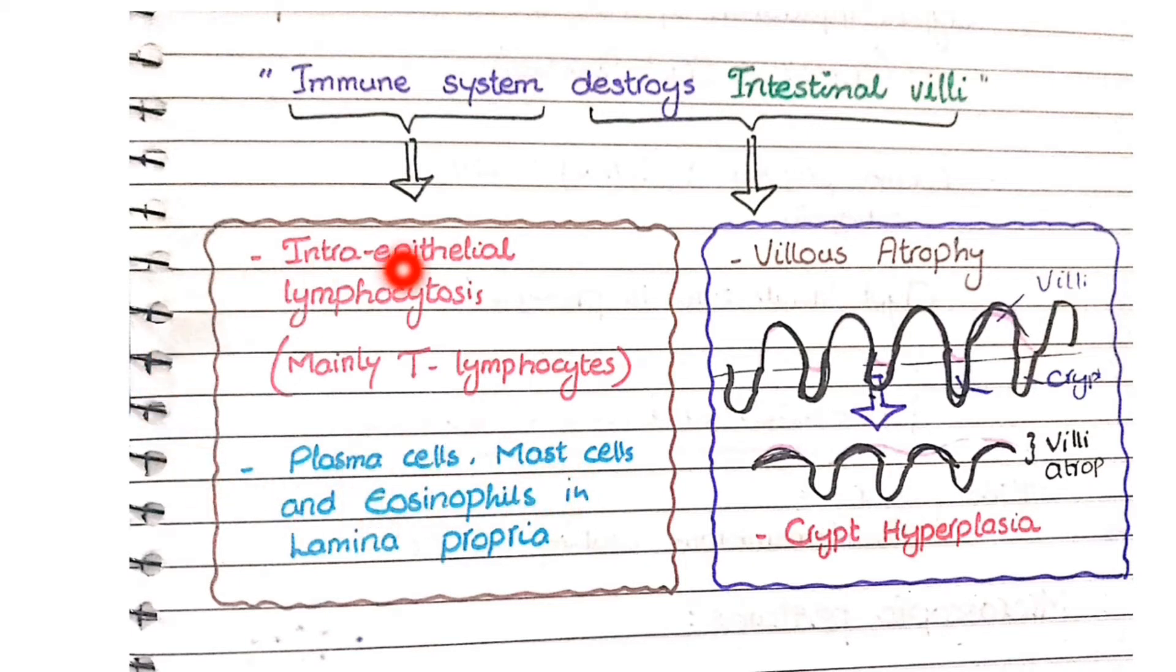But the most striking feature is intraepithelial lymphocytosis. The second keyword is destroys intestinal villi, so you will see villus atrophy and crypt hyperplasia. Now let me explain this point.